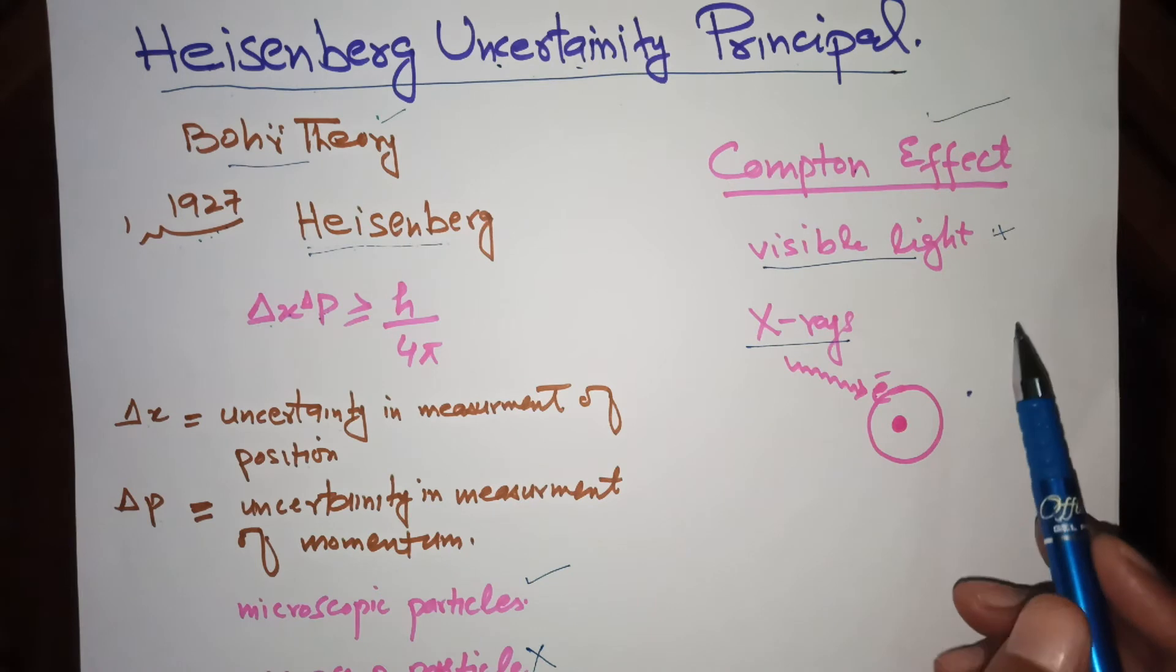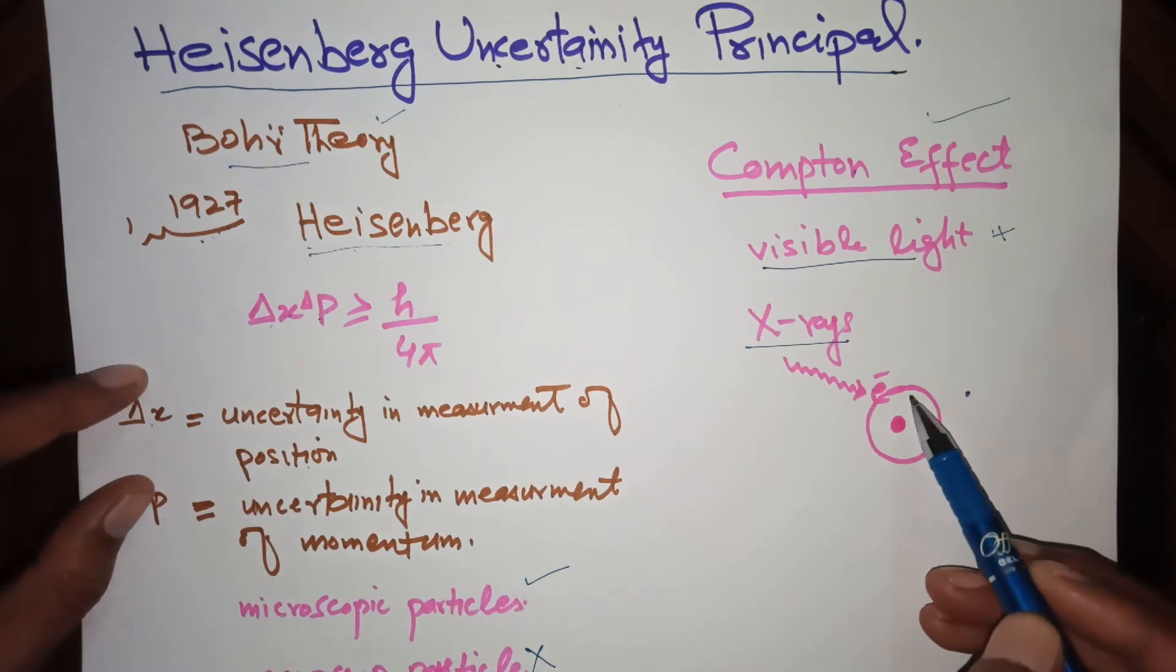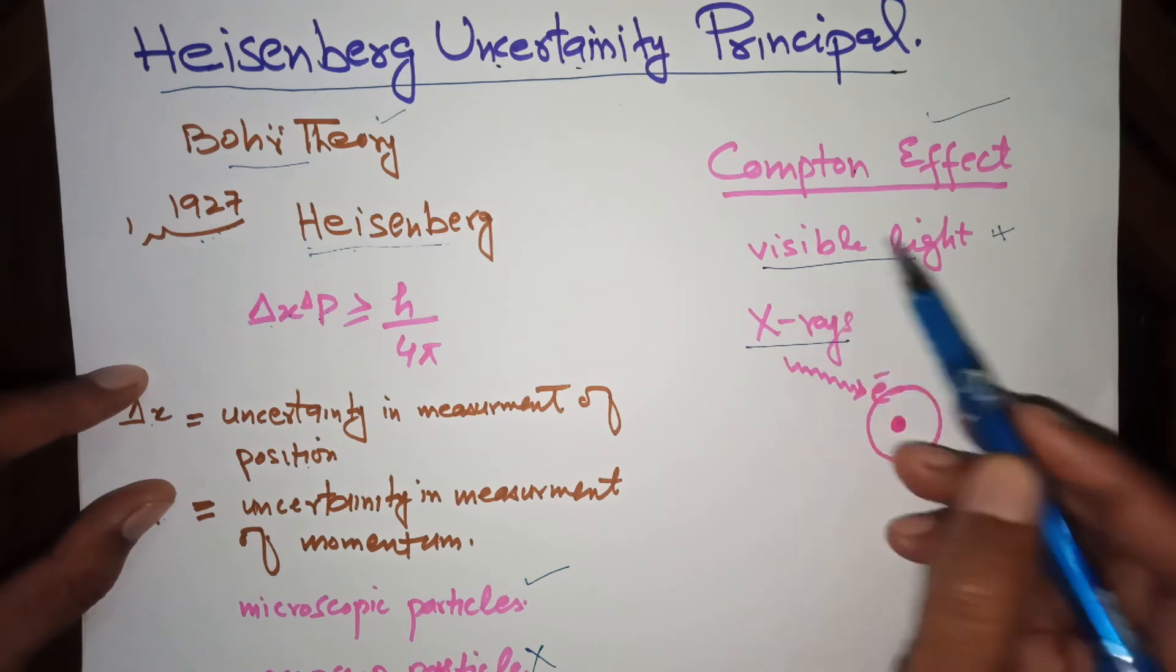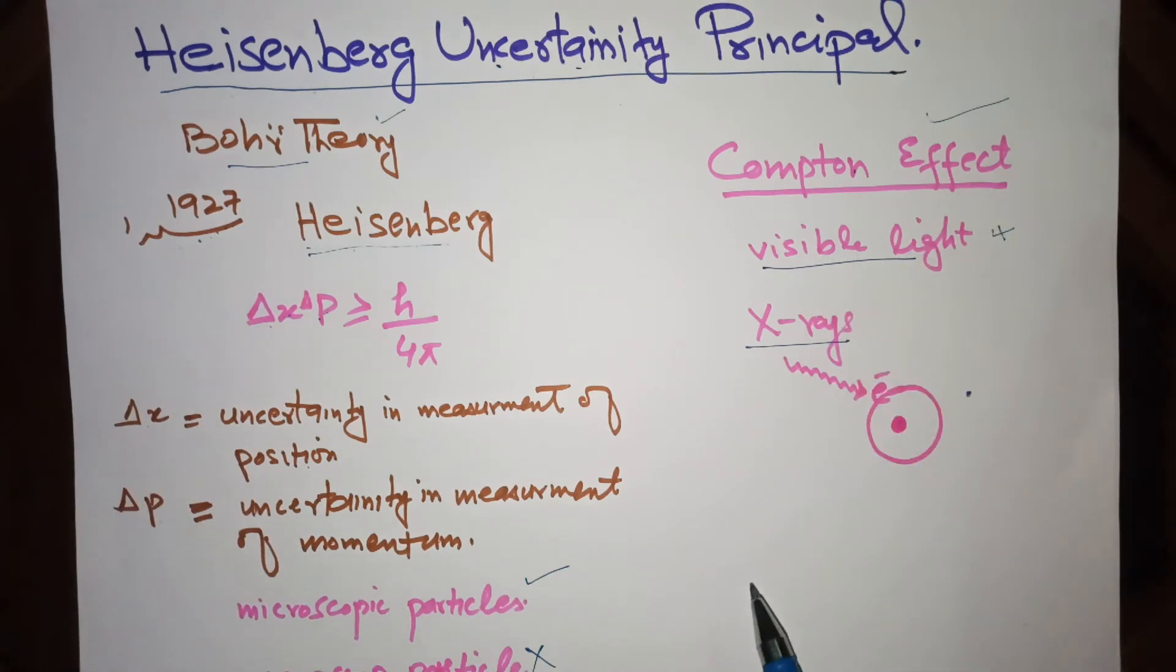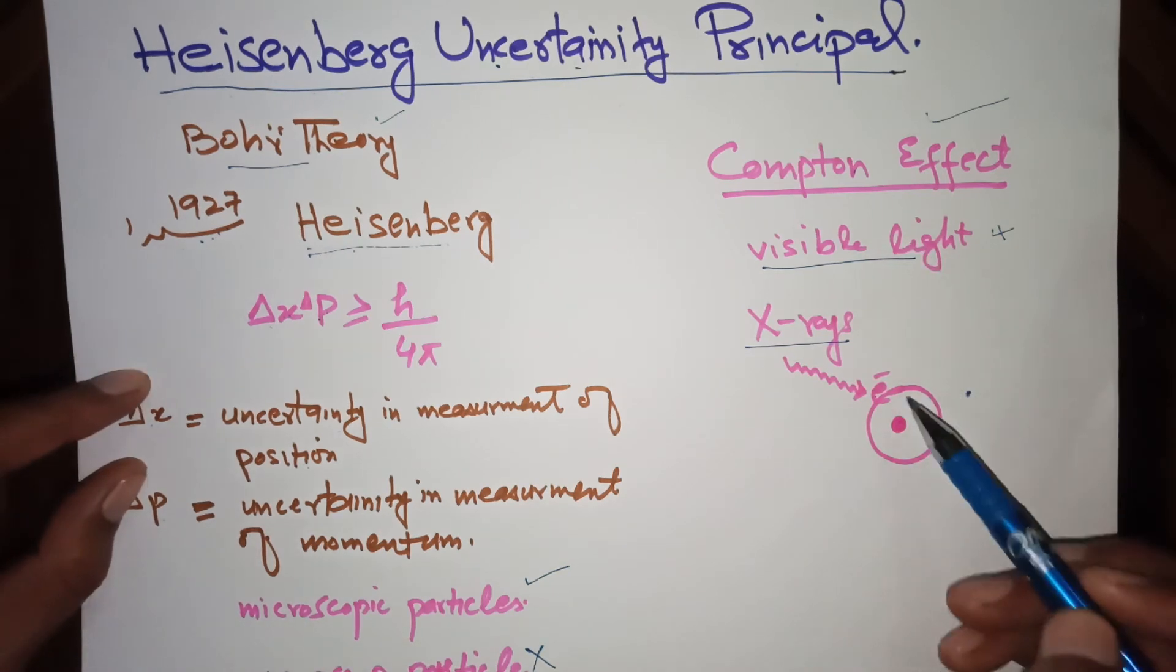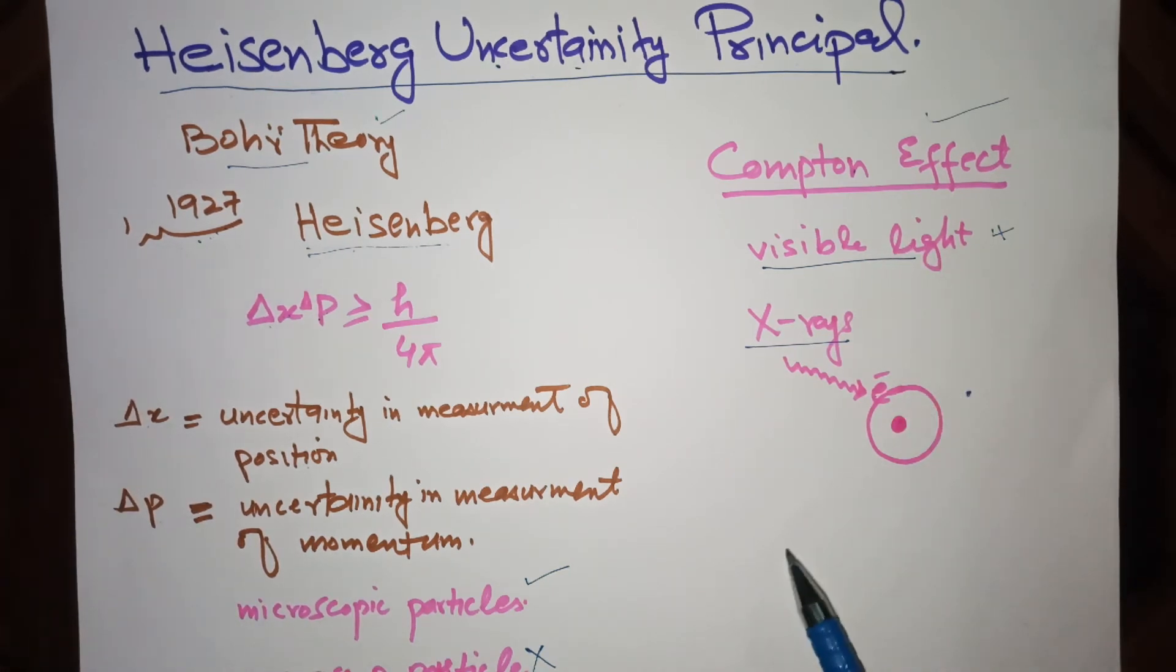Suppose, if we want to find the position of electron that is moving around the nucleus, we cannot use visible light. Because the wavelength of visible light is million times greater than the diameter of electron.